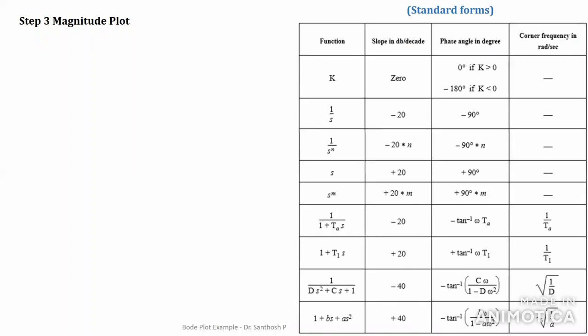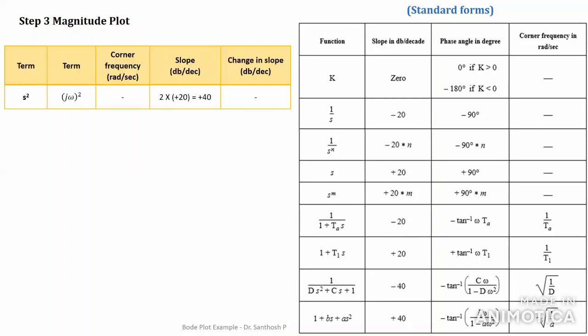When k = 1, the transfer function becomes (jω)² divided by (1 + 0.2jω)(1 + 0.02jω). This is our new expression. Now we are in step 3: determining the magnitude plot. First, let us refer to the standard forms from the table. We have three terms in the expression.